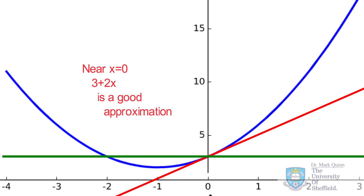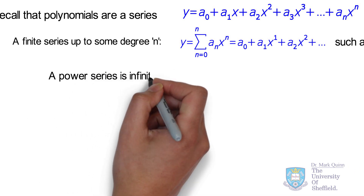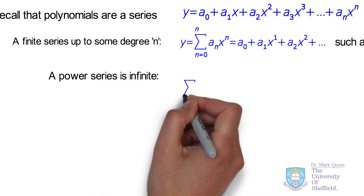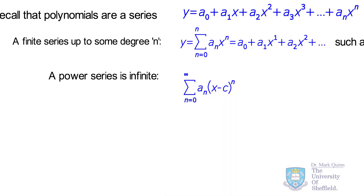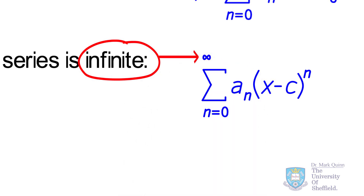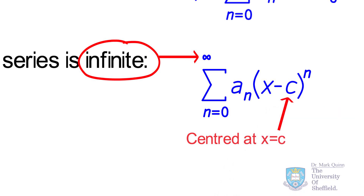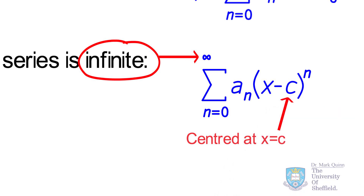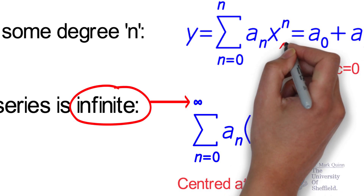Similar to a polynomial series, a power series is a sequence of terms but in this case the series is infinite. We can also define where we would like this series to be centered. So rather than zeroing at x equal to 0, as in the polynomial example, we can take any center point we like and express our power series from that point. Notice if c is equal to 0, then we have the same series expansion as for our polynomial.